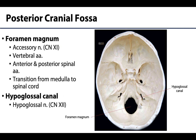The most obvious foramen in the posterior cranial fossa — and arguably throughout the entire skull — is the foramen magnum, the second largest foramen in the body. It is at the foramen magnum that the transition from the medulla oblongata to the spinal cord occurs. The accessory nerve ascends through the foramen magnum from the spinal cord and almost immediately exits via the jugular foramen, so it is associated with both. The vertebral arteries also ascend through the foramen magnum to be a major blood supply to the brain.